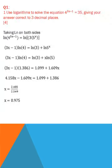Now we should move towards question number 1. Use logarithms to solve the equation: 4 to the power 3x minus 1 is equal to 35, giving your answer correct to 3 decimal places. It carries 4 marks. Taking ln on both sides, we take ln on both sides in order to solve the equation. When we take ln, we use the power rule here.